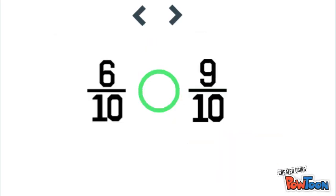So to sum it all up, when comparing fractions with the same denominators, all you gotta do is find the fraction with the greater numerator, and pick the symbol that's opening its mouth towards the greater fraction. Thanks for watchin', see you next time. Peace.